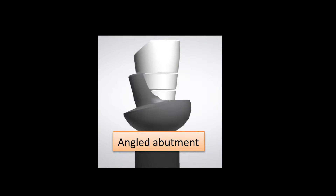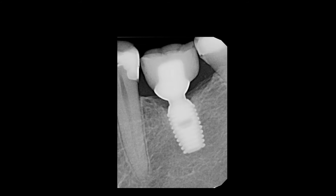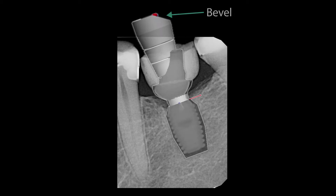The position of the bevel relative to an implant indicates the direction to which the prosthetic head of an angled abutment will be positioned. Therefore, if an implant is positioned too mesially in an edentulous space, the bevel on the scan post should be positioned distally to allow for the prosthetic head portion of the abutment to be positioned distally within the edentulous space.